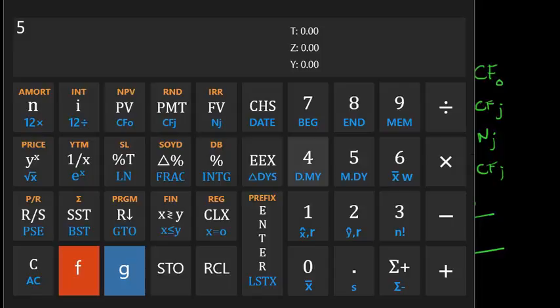I shouldn't have cleared that. I should have just changed the interest rate. 5%. 94.17, change sign, cash flow zero. 3.5, cash flow 1. Repeated 15 times. Final cash flow, 103.5.